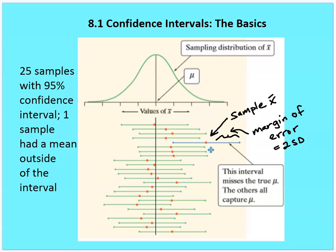As we construct these confidence intervals, we're saying that we're 95% confident that the interval we've constructed contains the true population mean. You can see that in all but one of them that's the case. We need to clarify between our sampling and the actual population mean, which we discussed a little in Chapter 7.